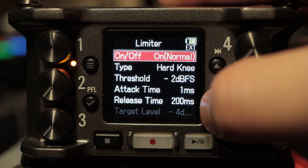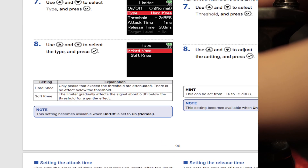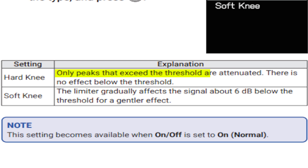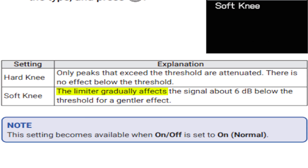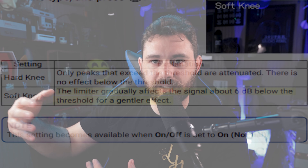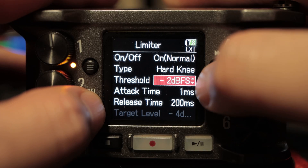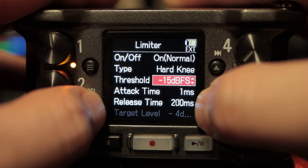First up there's the knee — hard knee or soft knee. Hard knee means only peaks that exceed the threshold are attenuated; there is no effect below the threshold. Soft knee means the limiter gradually affects the signal about six decibels below the threshold for a gentler effect — more like an attack and release, easing in and out, similar to how a noise gate works. Every situation requires a specific setting.